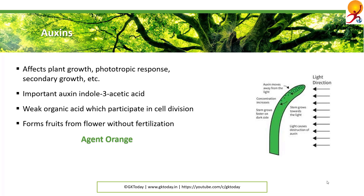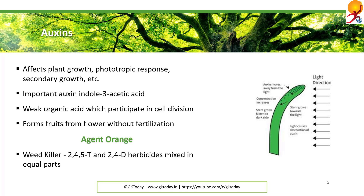Now, what is Agent Orange? We just talked about 2,4-D and 2,4,5-T. 2,4-dichlorophenoxyacetic acid is a synthetic auxin frequently used as a weed killer of broad-leaved weeds. When two herbicides — 2,4,5-T and 2,4-D — are mixed in equal parts, it is called Agent Orange. This was used by the U.S. in the Vietnam War.